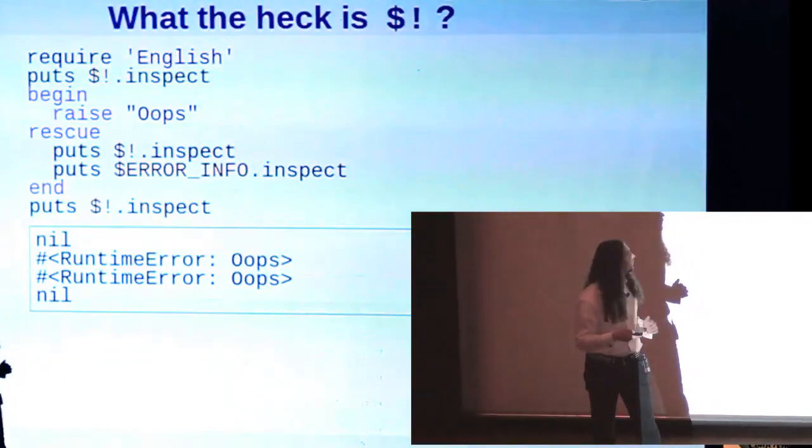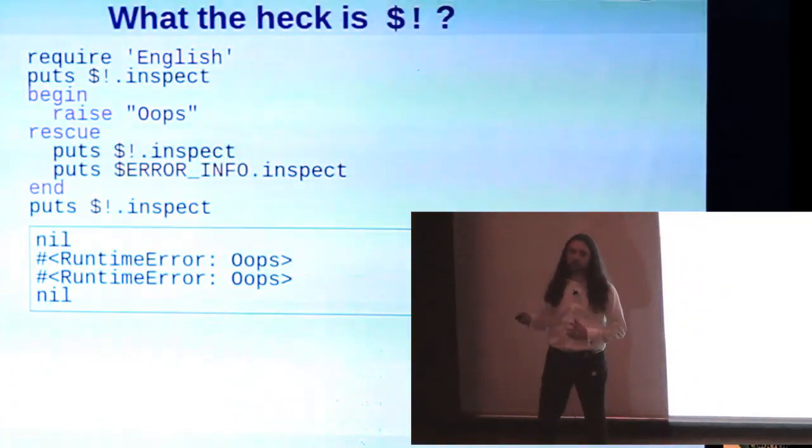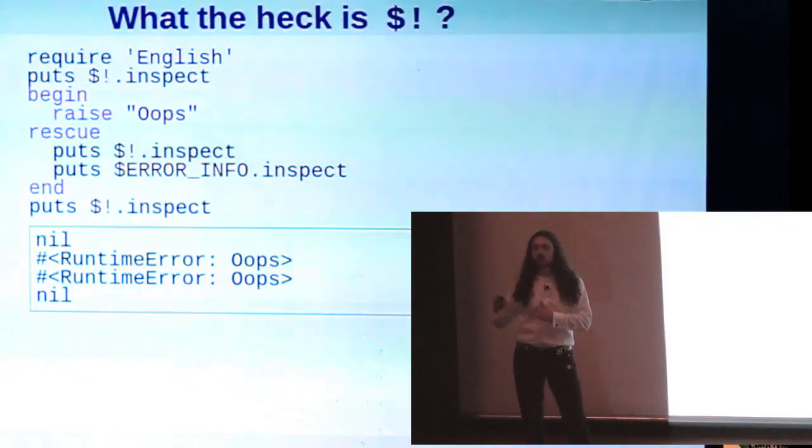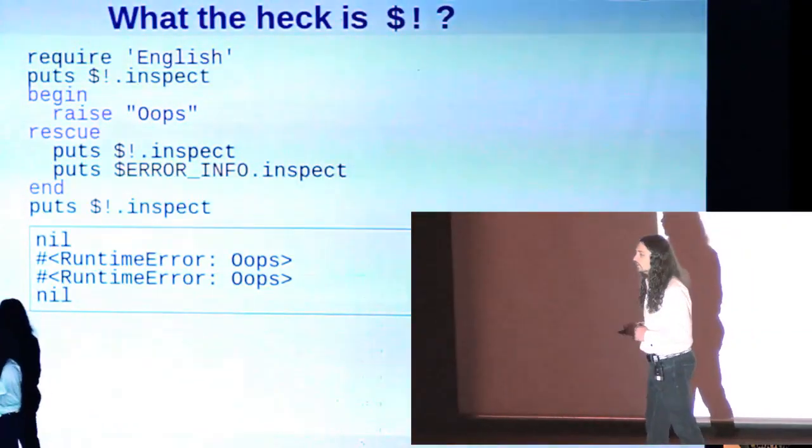So here's a simple example of using it. What this demonstrates is simply that before an exception is raised, that variable is nil. While it's being handled, while it's being rescued, that variable is set to the current exception, and then once it's been handled, the variable is once again nil.